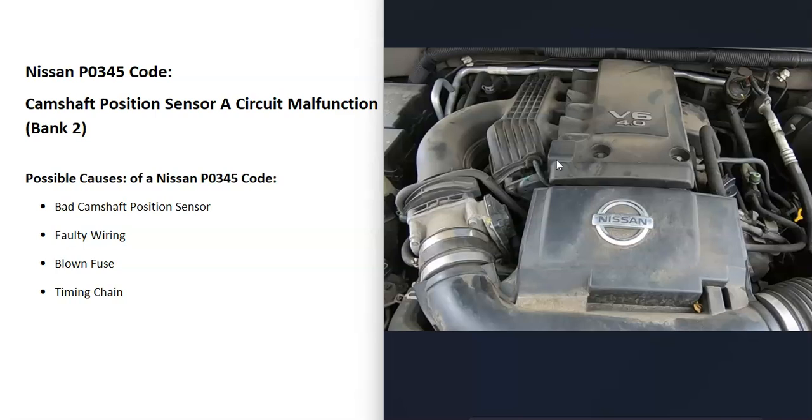For example, here's a 2010 Nissan Pathfinder. This left side is bank 1, and this side over here is bank 2. The computer is seeing a problem with the camshaft position sensor on this side of the engine. There are two sensors, one on bank 1 and one on bank 2.